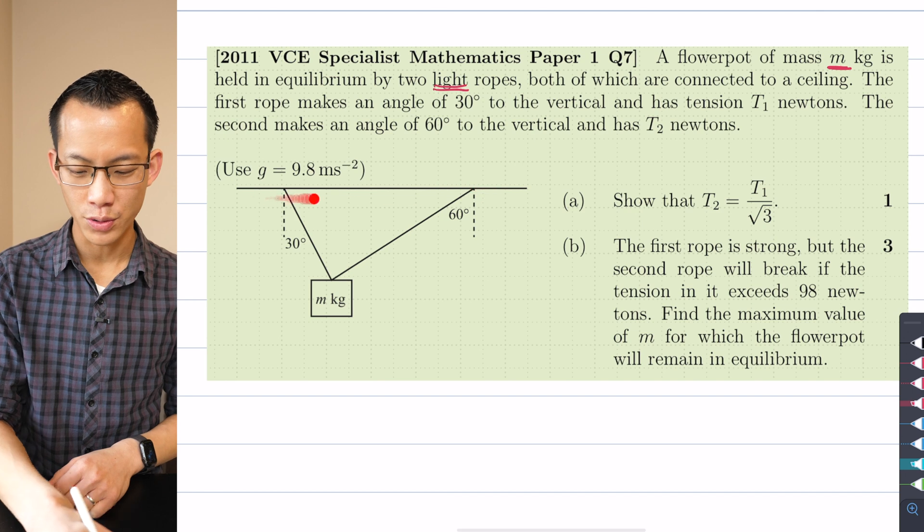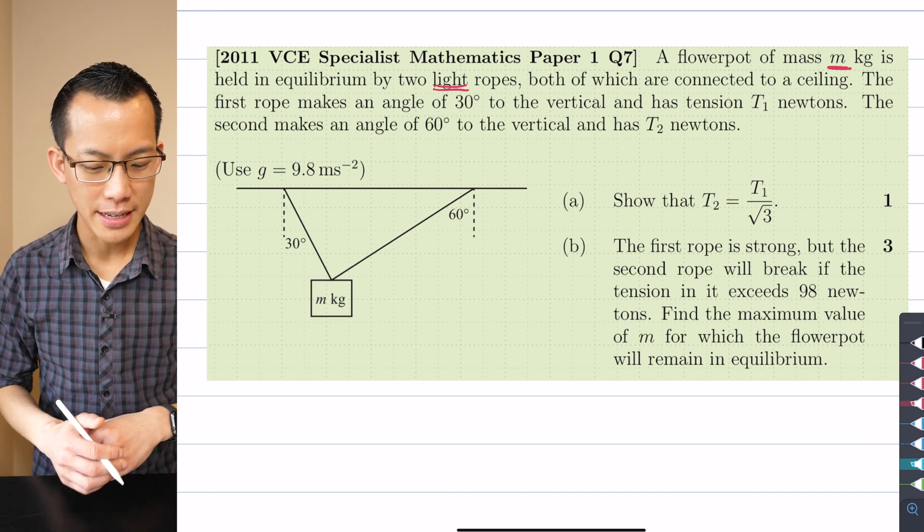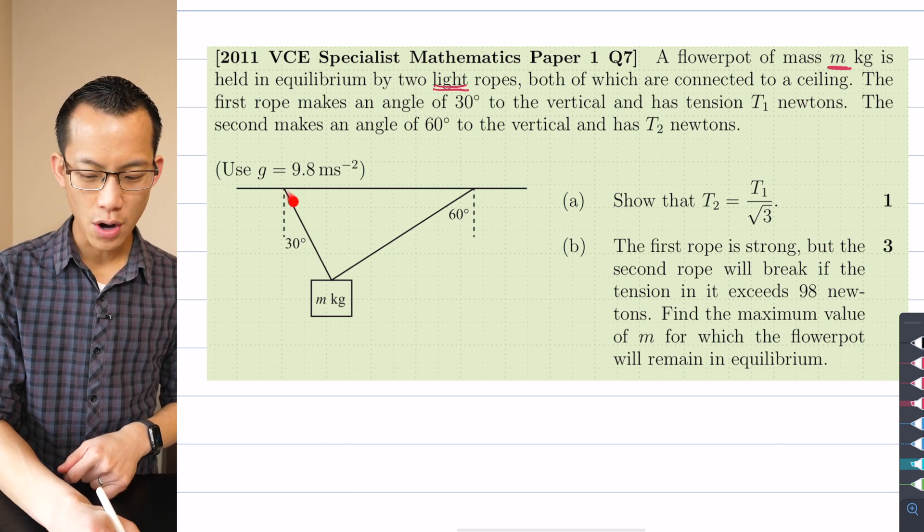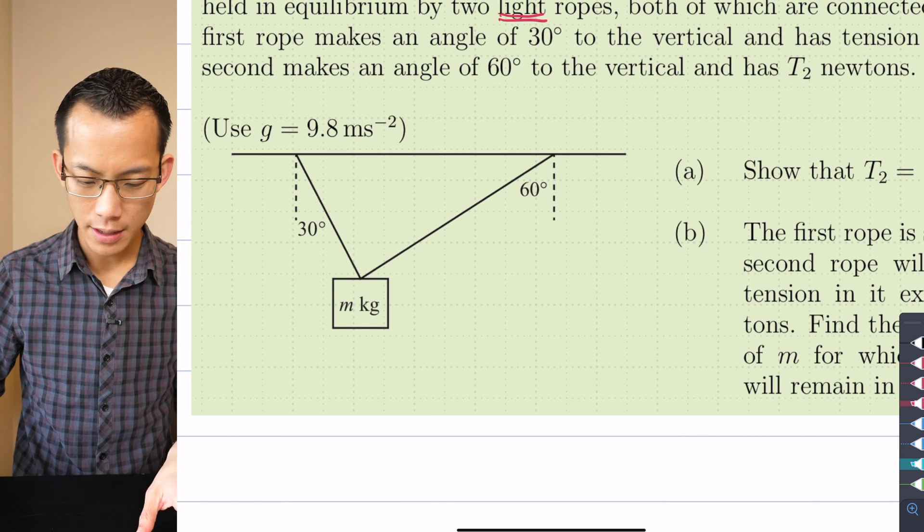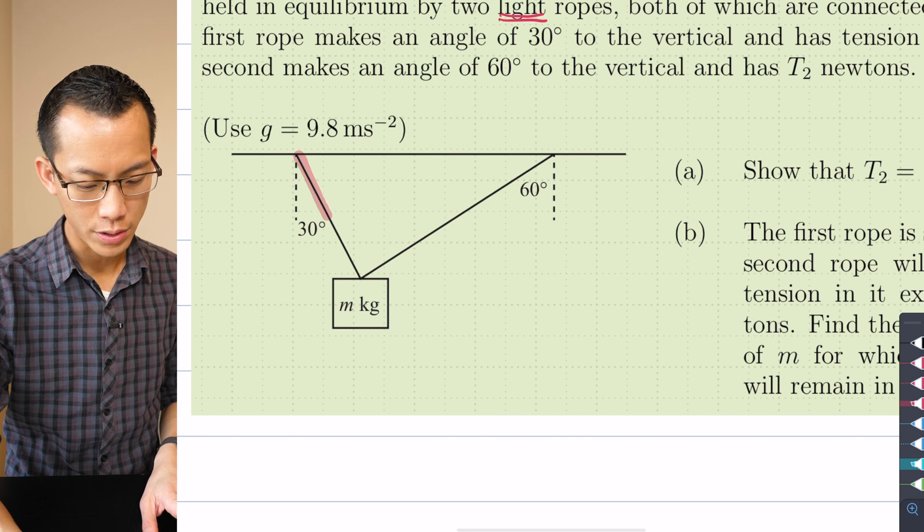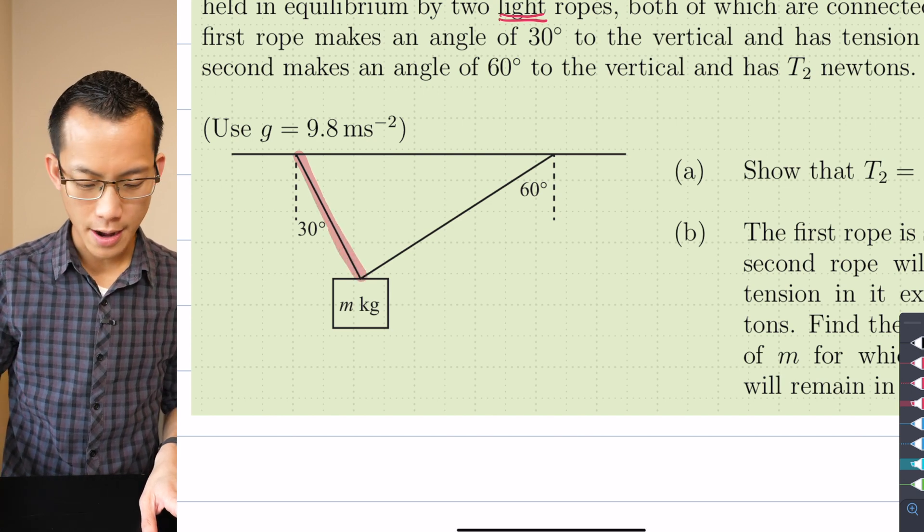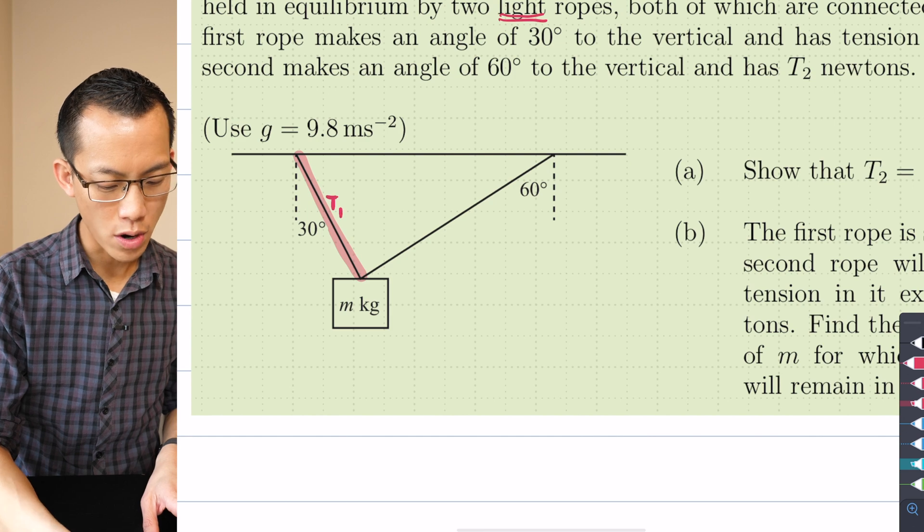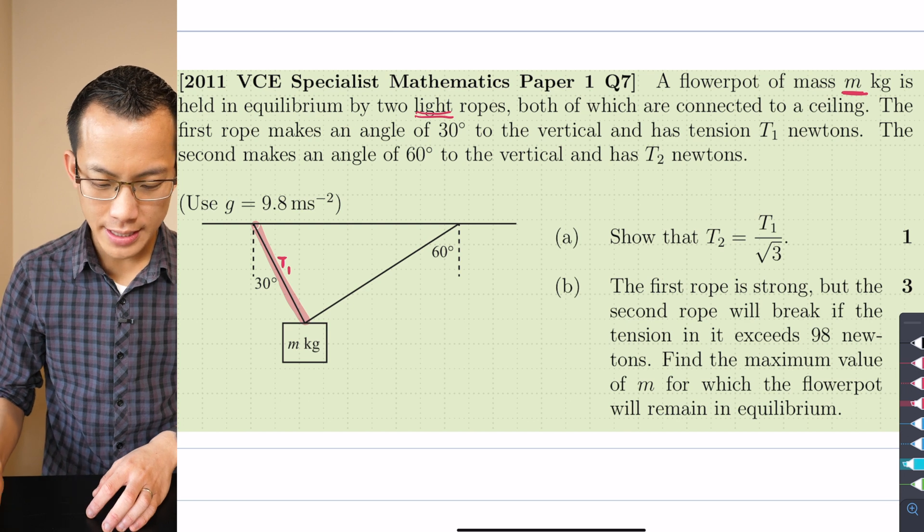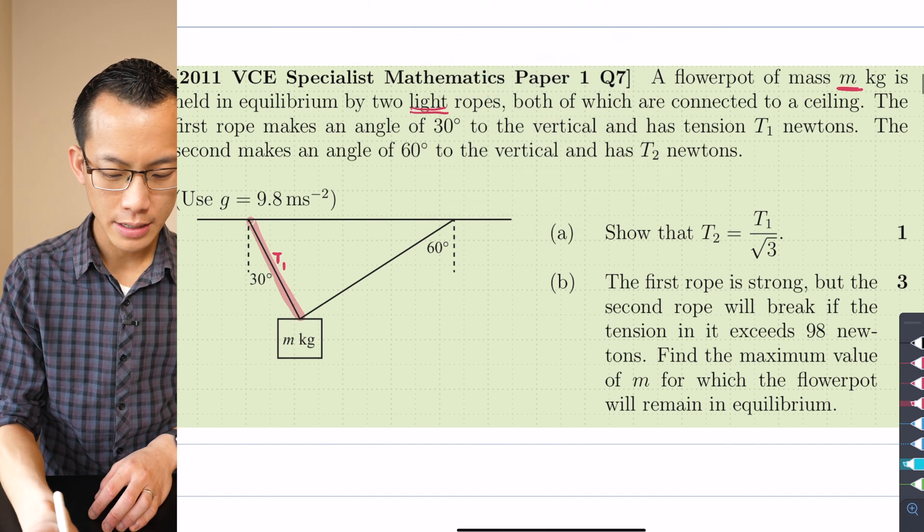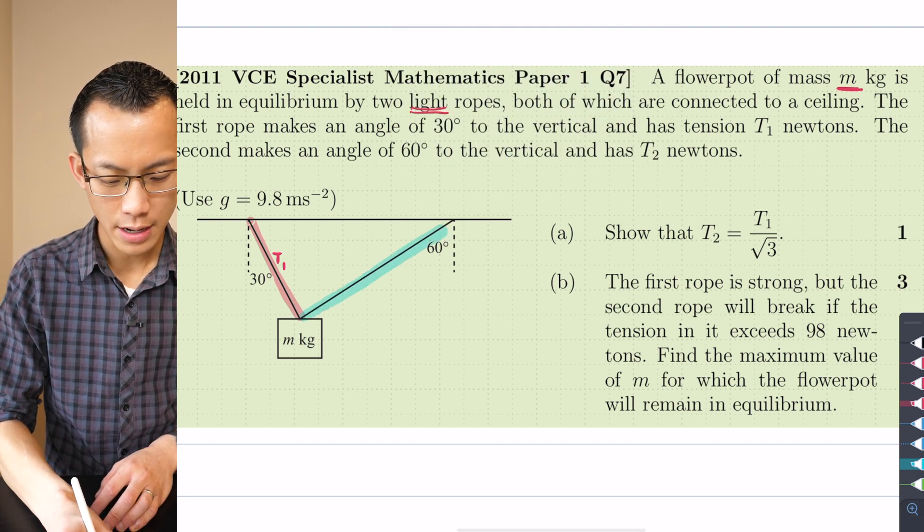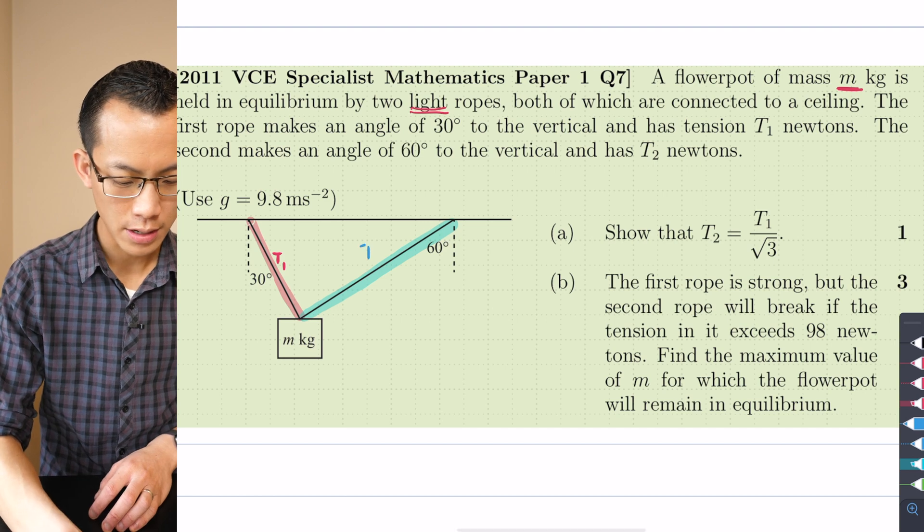Both ropes are connected to a ceiling, they're sort of strung up. Here's our horizontal ceiling bar. The first rope makes an angle of 30 degrees to the vertical and it's got a tension of T1 newtons. So let's mark that in, I'm going to make this a bit thinner, this is the first rope here, we know it's the first one because it's got that 30 degree angle. I'm going to call that T1 newtons going off in that direction. The second makes an angle of 60 degrees to the vertical and has a tension of T2 newtons.